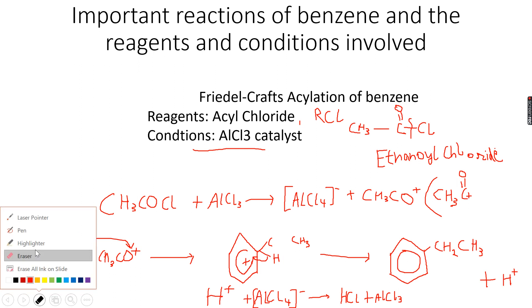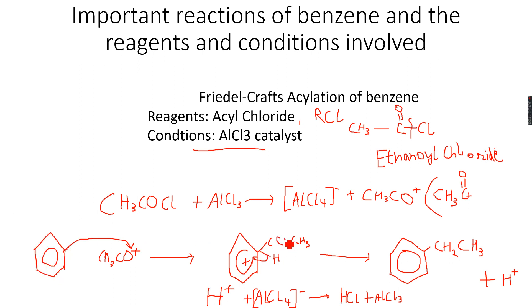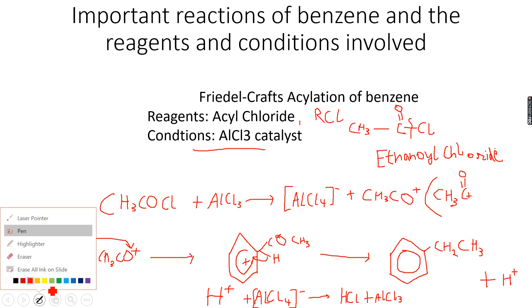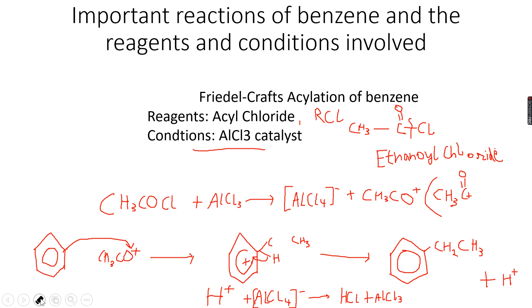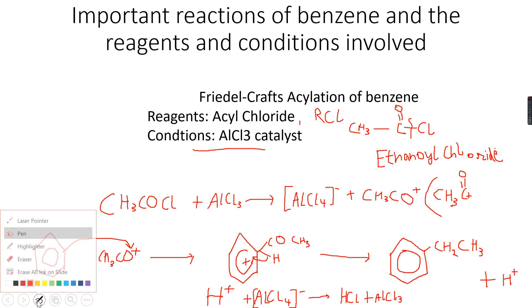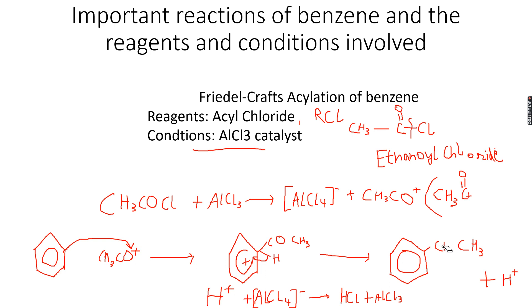So this is my acyl group now attached to the benzene ring. I want the unstable intermediate to become stable again, so the electron pair moves here to neutralize this charge, and we get our stable benzene again.